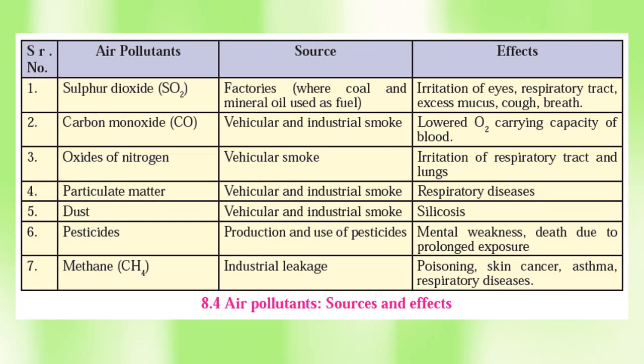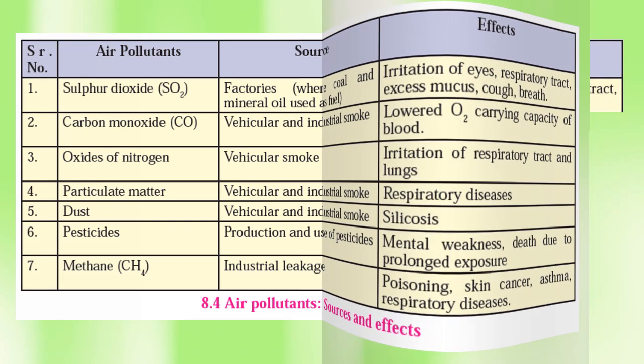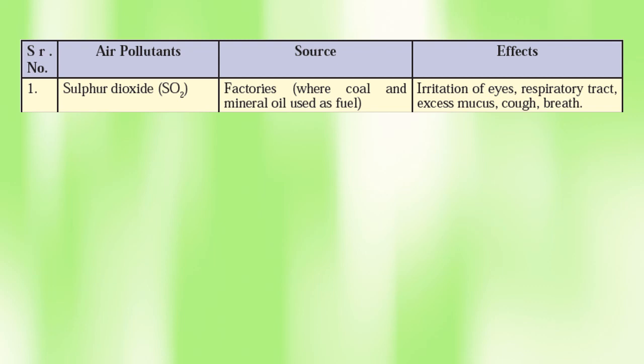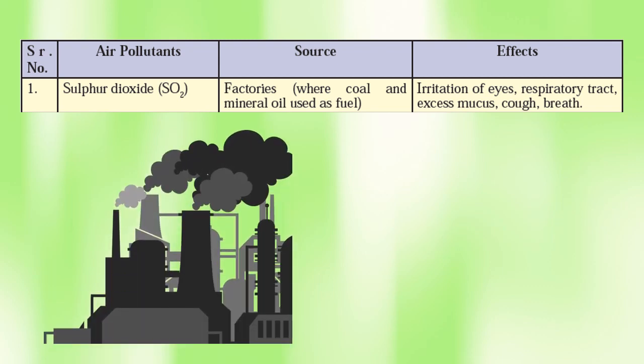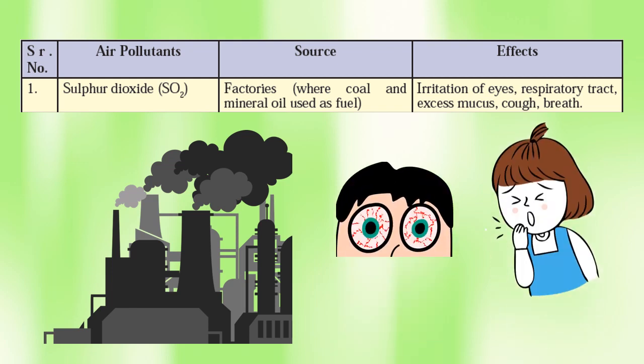We have a table listing air pollutants, their sources, and their effects. Number one — sulfur dioxide. Source: factories where coal and mineral oil are used as fuel. Effects: irritation of eyes and respiratory tract, excess mucus, cough, and difficulty in breathing. Mucus is a liquid substance coming out from the nose. These are the effects of sulfur dioxide.